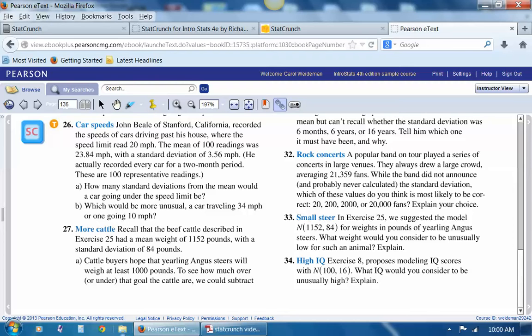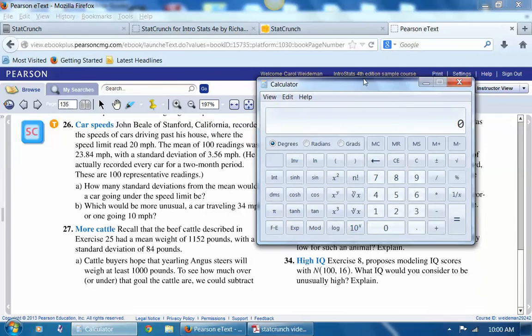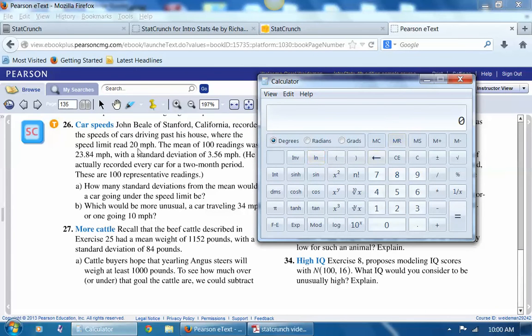So remember to do a z-score. I don't even need StatCrunch for this. I'm just going to pull up a little online calculator. So I'm looking at this car going 20 miles per hour, and I'm going to see how far away it is from the mean of 23.84, and it's 3.8 miles below the mean. And then I'm going to divide by the standard deviation, which gives me the z-score. So this particular car that's going the speed limit is about 1.08 standard deviations below the mean.